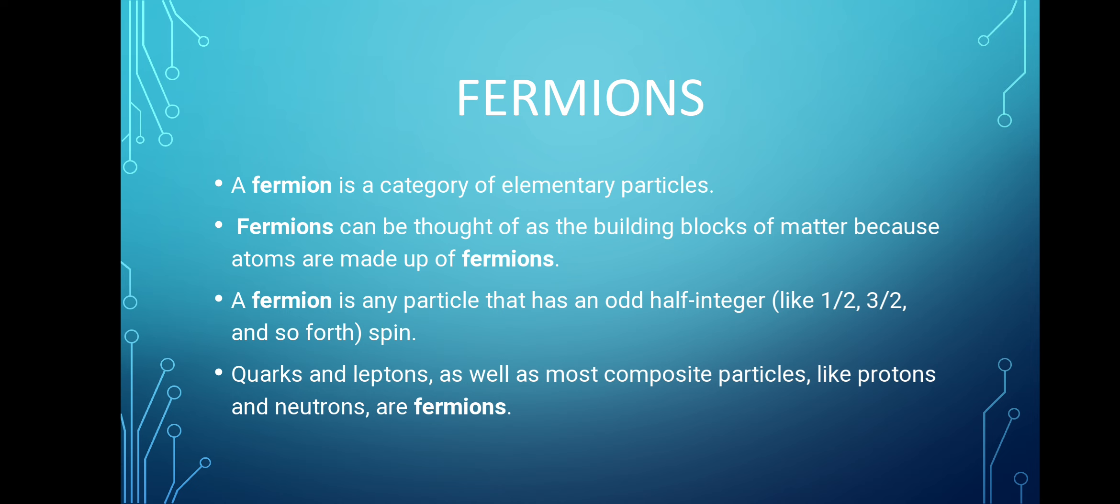Now let me introduce you to a new term, fermions. Fermions is a category of elementary particle. What is a fermion? A fermion is any particle that has an odd half-integer spin, like one-half, three-halves, etc. But spin like two-thirds do not exist so far. Thus quarks and leptons as well as most composite particles like protons and neutrons are fermions. Therefore we can say fermions are the building blocks of matter.